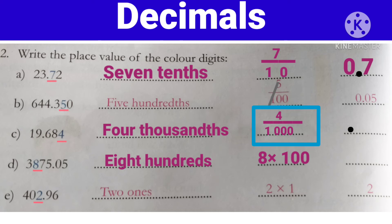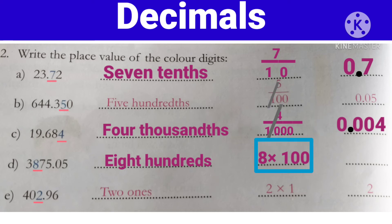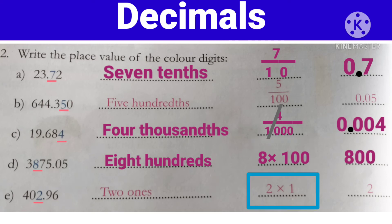Now next one — 4 by 1000. 4 ko aur 1 ko hum cancel karenge. Toh denominator mein humare paas kitnay zeros hain? 3 zeros. Ab woh 3 zeros ko hum numerator ke 4 ke saath likhenge — yani 0.004. Now next one — 8 into 100: woh to hoga 800. Now next one — 2 into 1: so, 2 ones are 2.